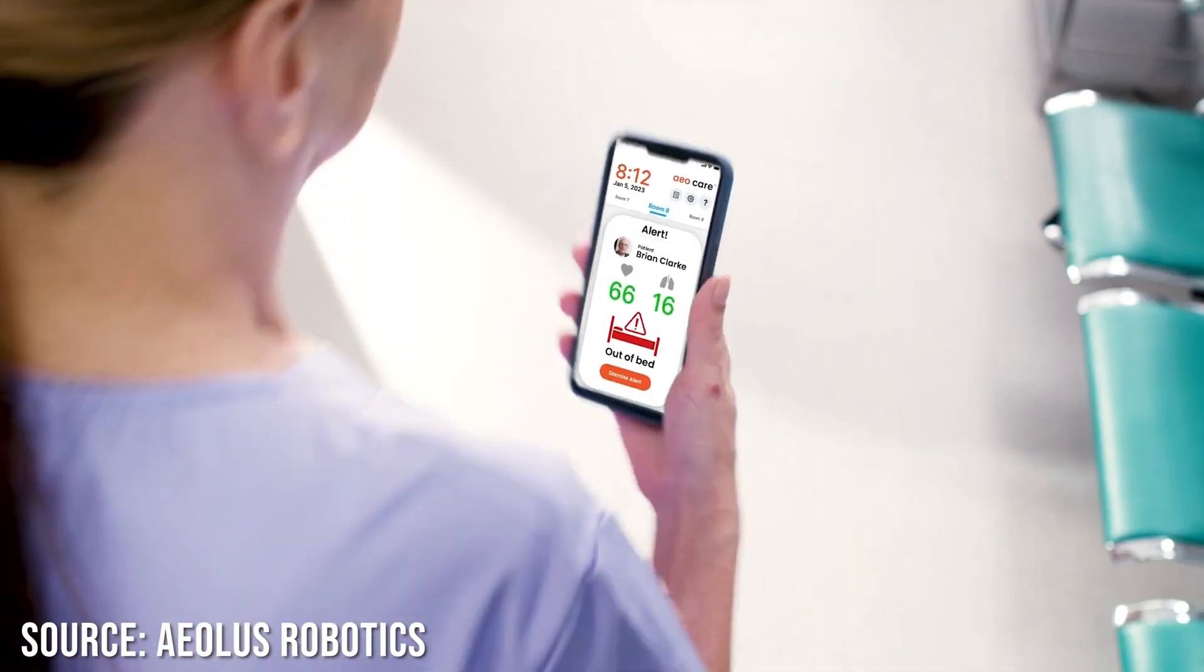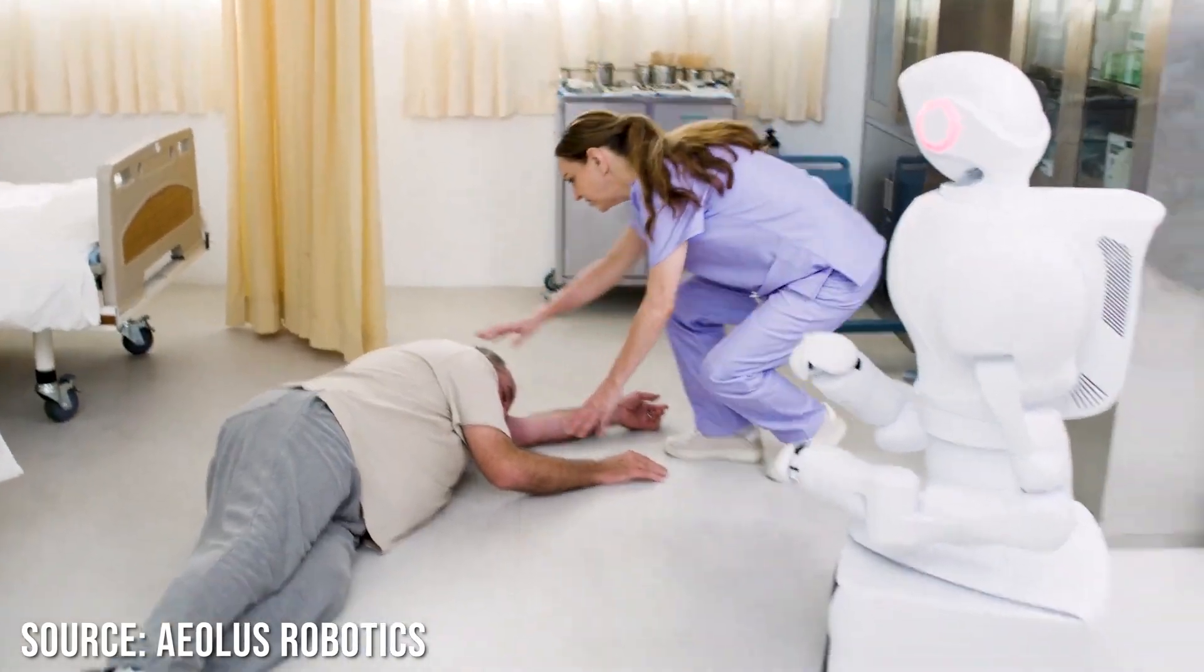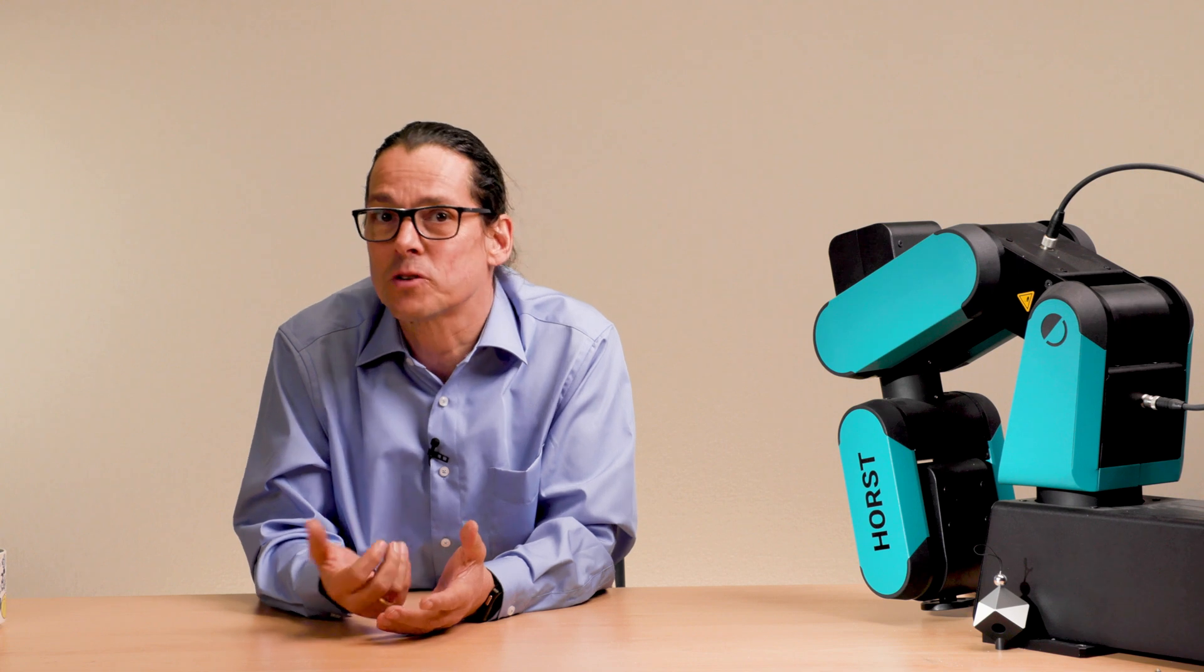It can lift around 4 kilos or 9 pounds and it can deliver food, drink or other items. Aiello has already been used in airports, hotels, hospitals in Taiwan, Hong Kong and Japan. And who knows, maybe the Aiello will soon expand all over the world.